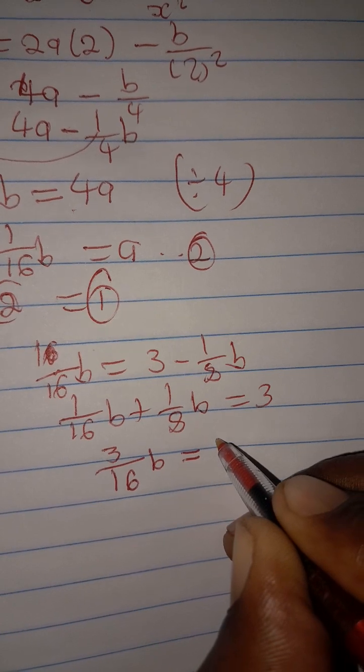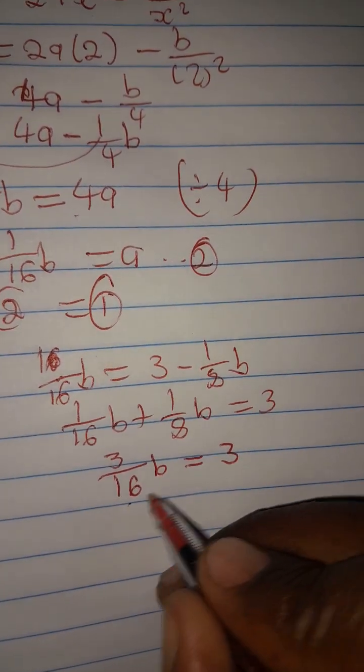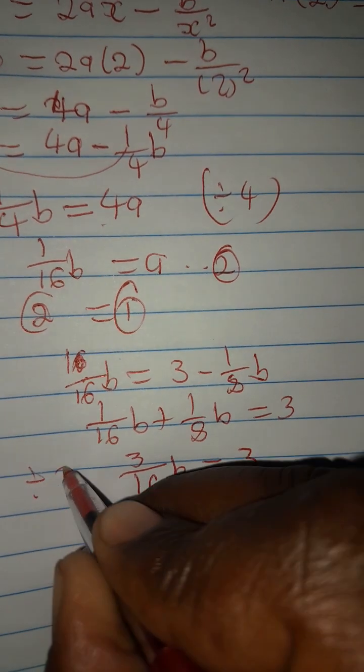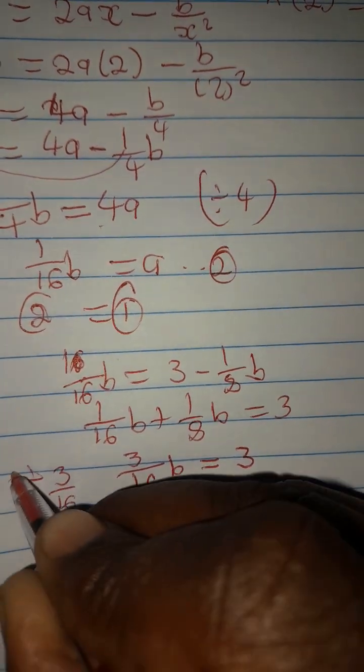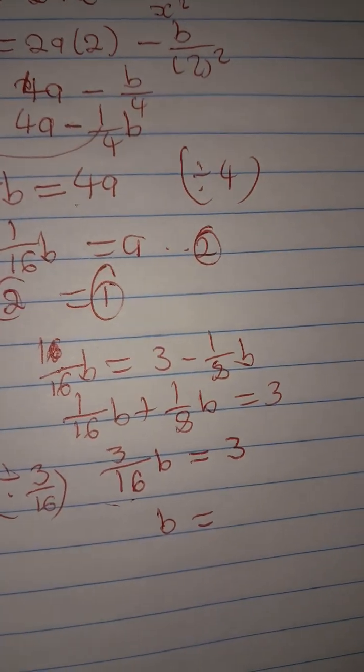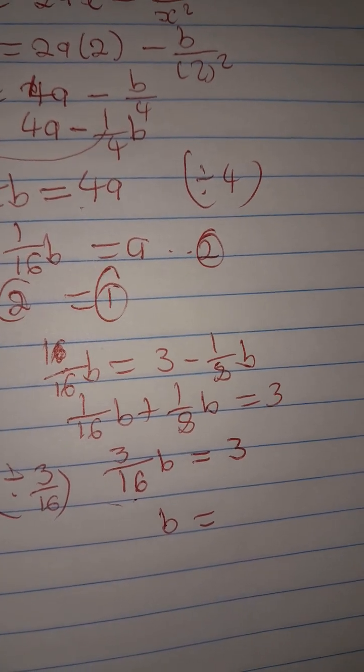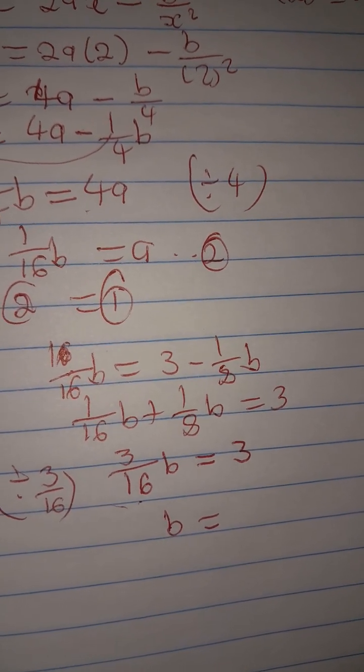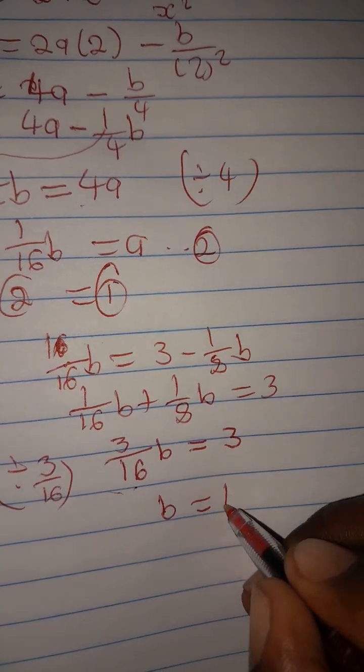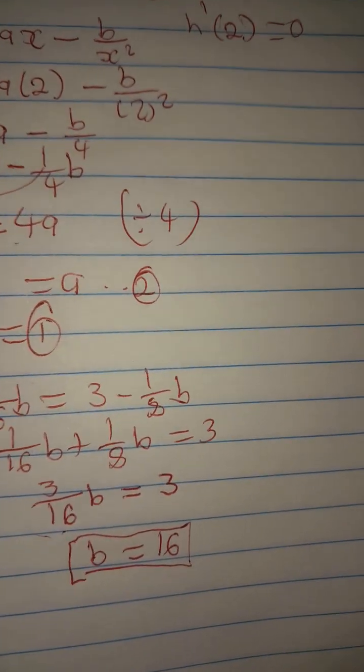Which equals 3. So what we could do here is dividing both sides by 3 all over 16. So what will be b? Let's just say 3 divided by 3 all over 16, that will be, b will be 16 in this case. So we are having b as 16. We are on the right direction.